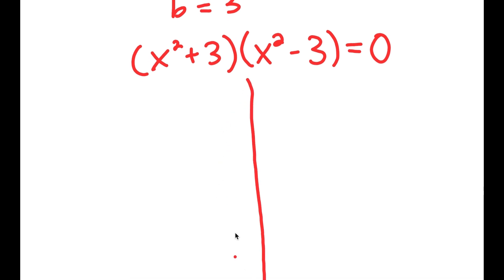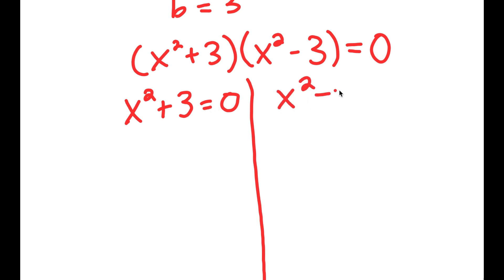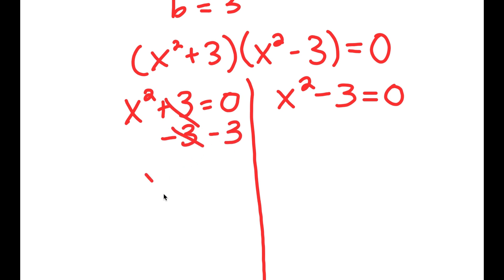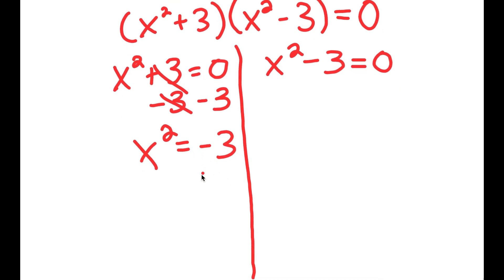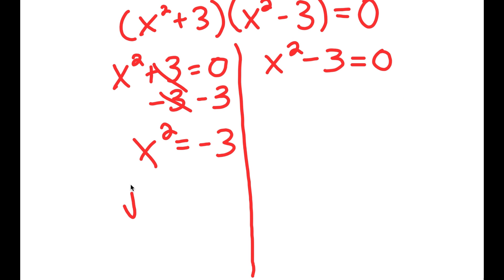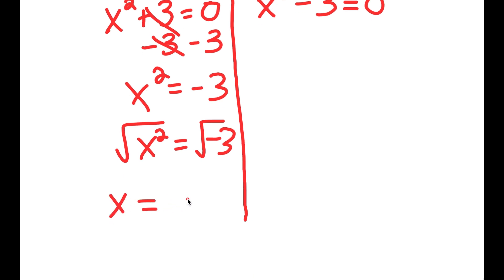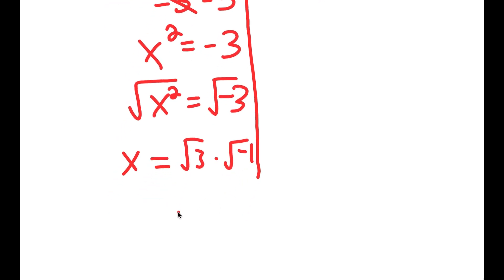This gives me two equations. I get x squared plus 3 is equal to 0, and x squared minus 3 is equal to 0. For x squared plus 3 equals 0, I subtract 3 on both sides, so x squared is equal to negative 3. Taking the square root on both sides, the square root of negative 3 equals the square root of 3 times the square root of negative 1, and the square root of negative 1 is equal to i. So x is equal to positive or negative square root of 3 times i.